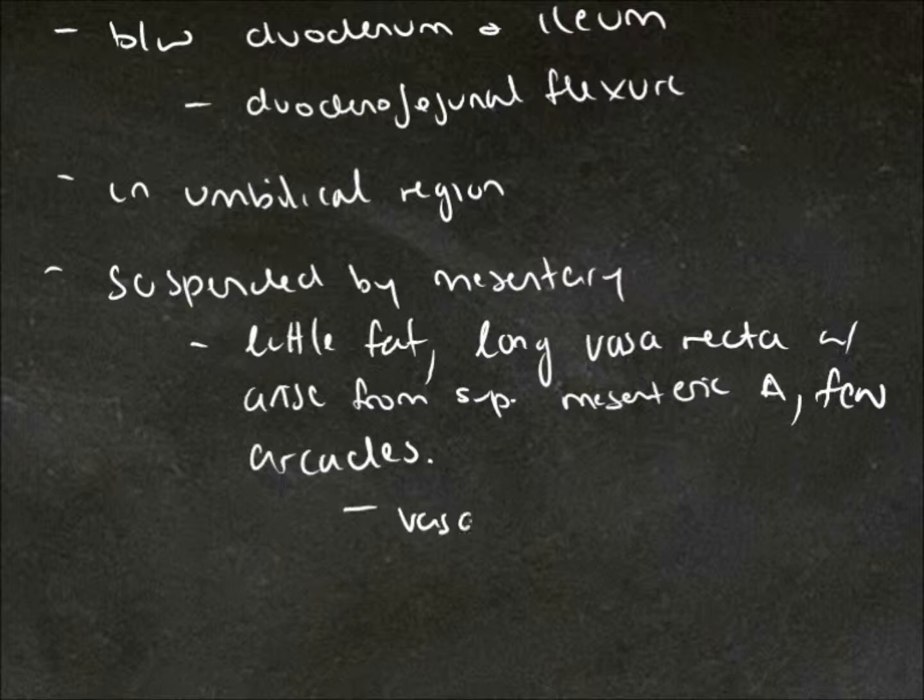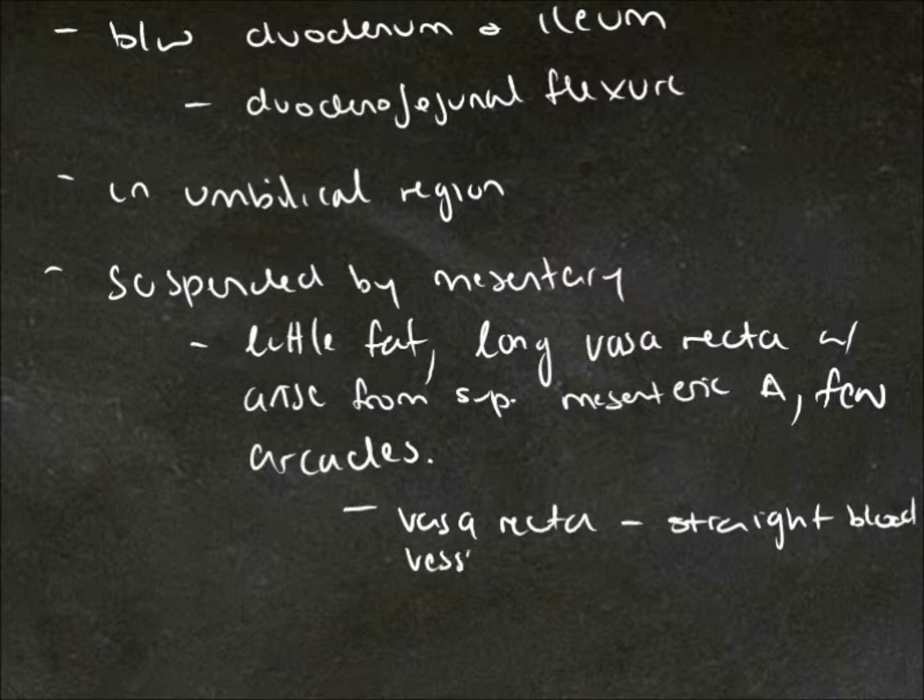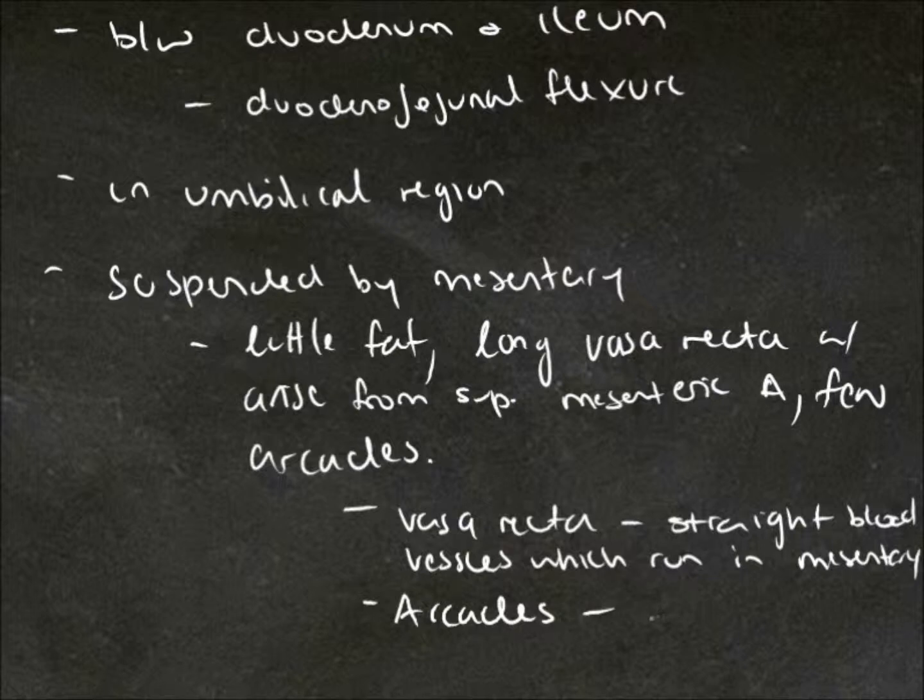Vasa recta are straight blood vessels which run in the mesentery. Arcades are anastomoses which are connecting these vasa recta.